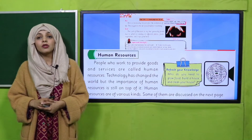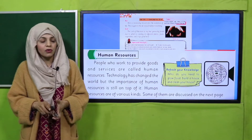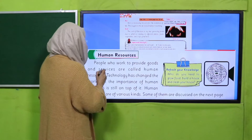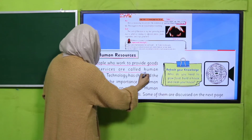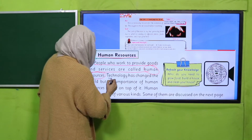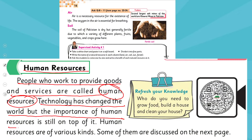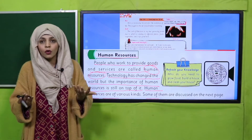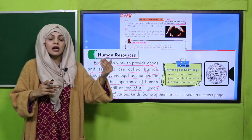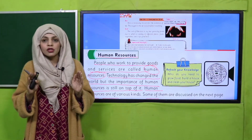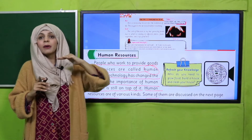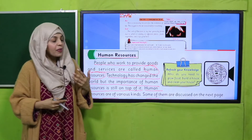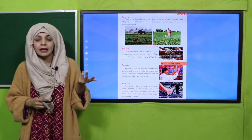Now quickly open page number 16 in your books. Put your fingers where I will read, because we are about to read about human resources. 'People who work to provide goods and services are called human resources. Technology has changed the world but the importance of human resources is still on top. Human resources are of various kinds; some of them are discussed on the next page.' Technology has improved and modified many things, but still human resources are the most important — without humans, your world cannot survive or excel. Now let's discuss some human resources. Open page number 17.